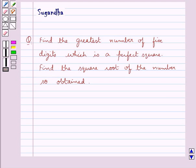Hello and welcome to the session. In this session we discuss the following question which says find the greatest number of five digits which is a perfect square. Find the square root of the number so obtained.